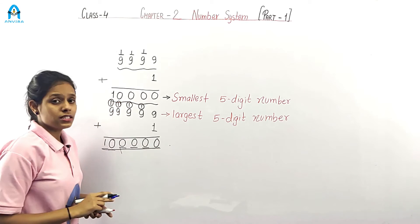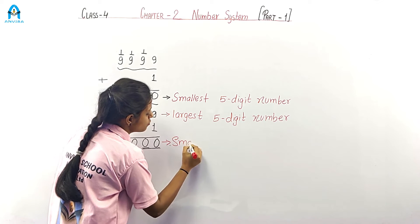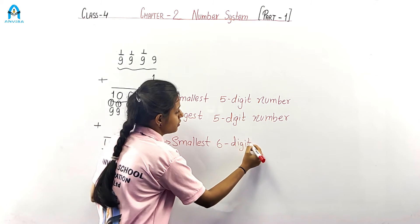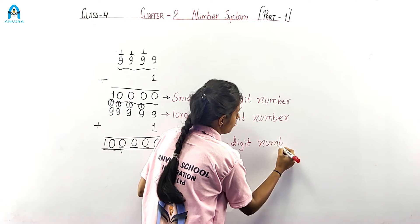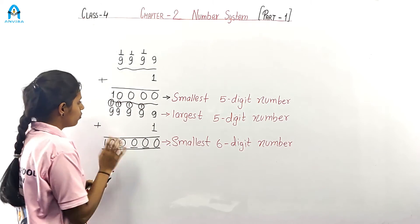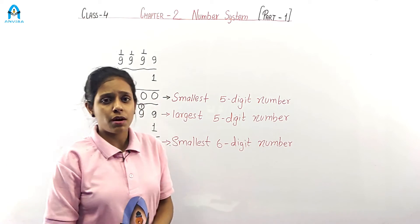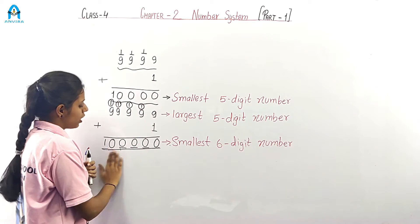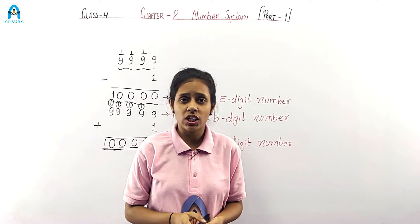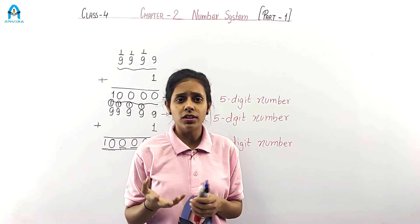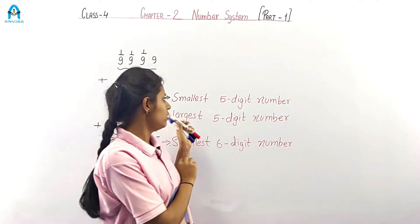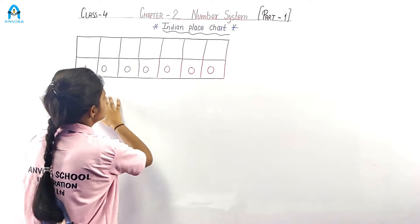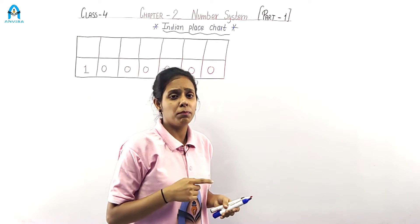This is a 6-digit number. Now, the smallest 6-digit number is 1,00,000. Now we have 5-digit numbers and 6-digit numbers. Let's learn how to read these numbers using a place value chart. Let's find out the place value of each digit. Look at the board — this is the place chart.